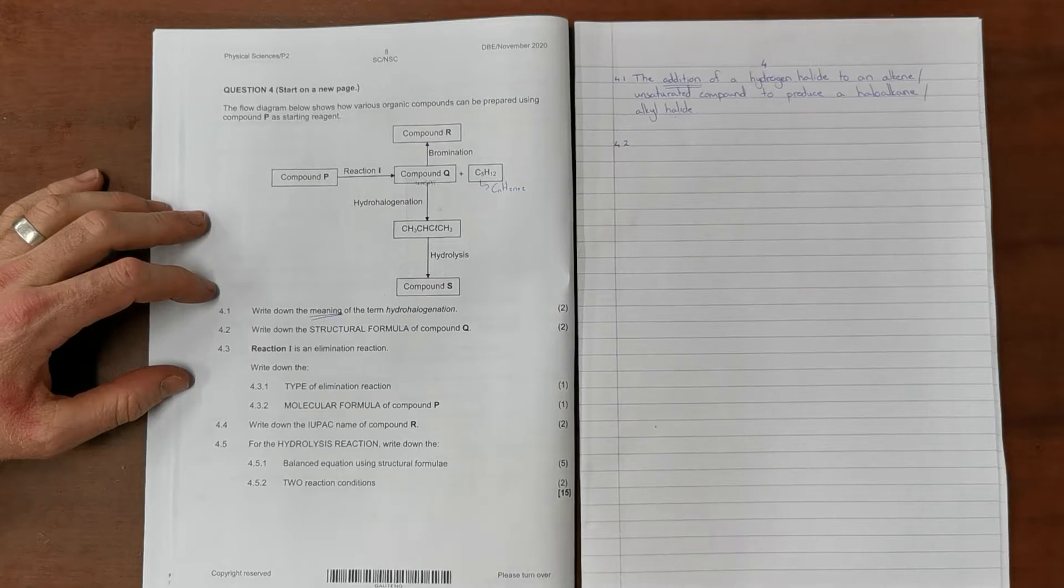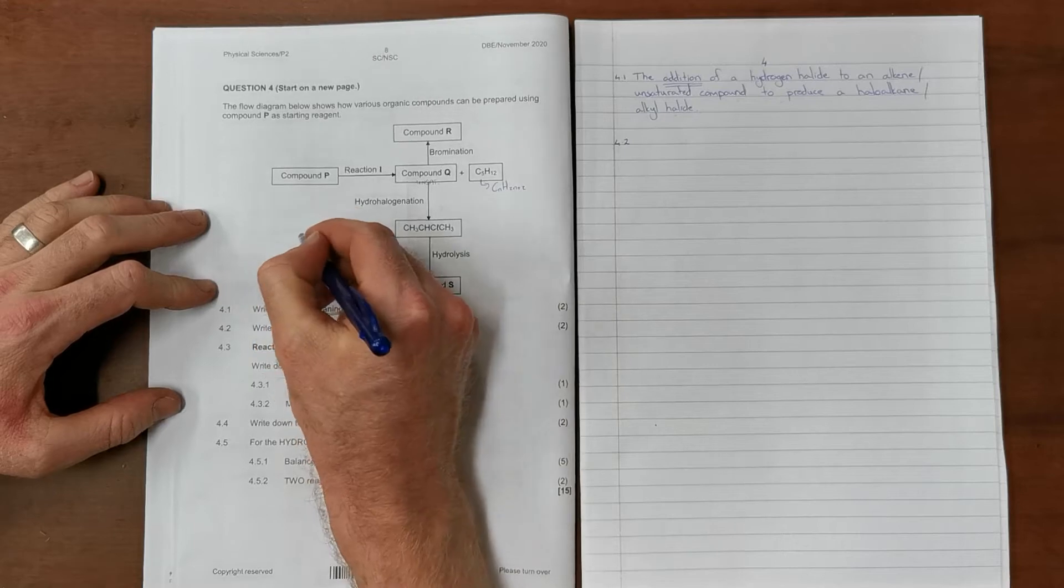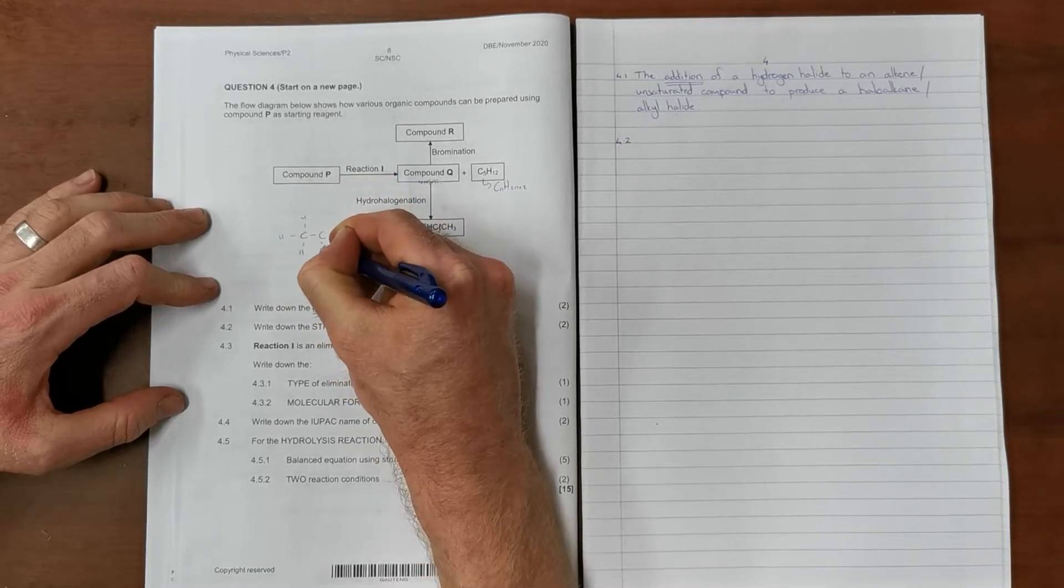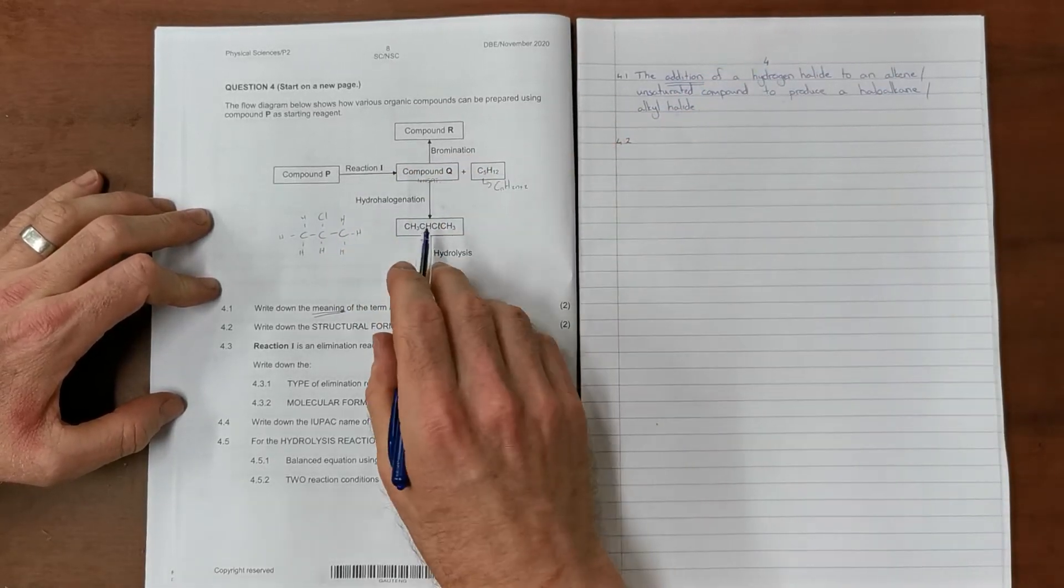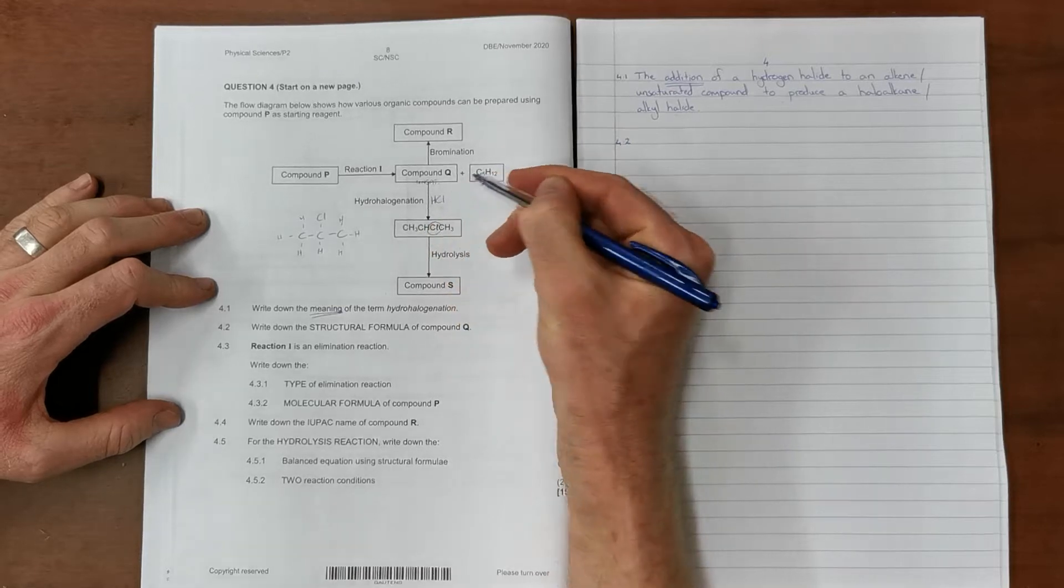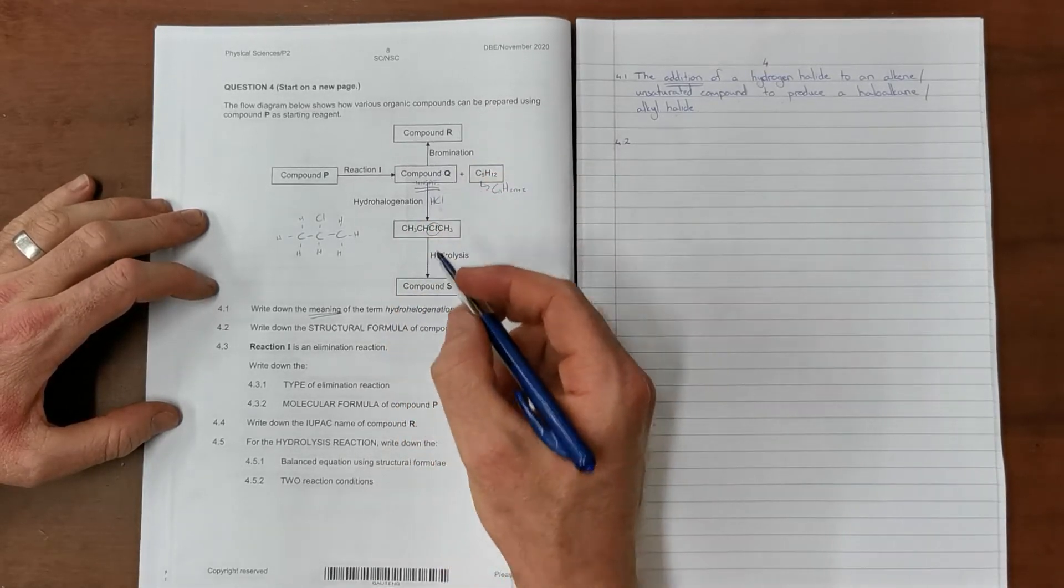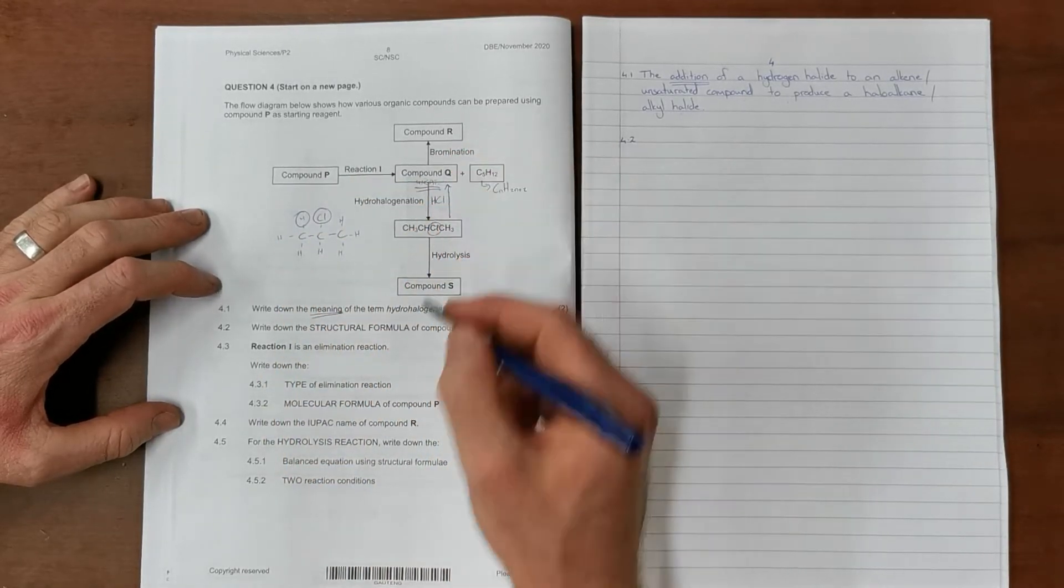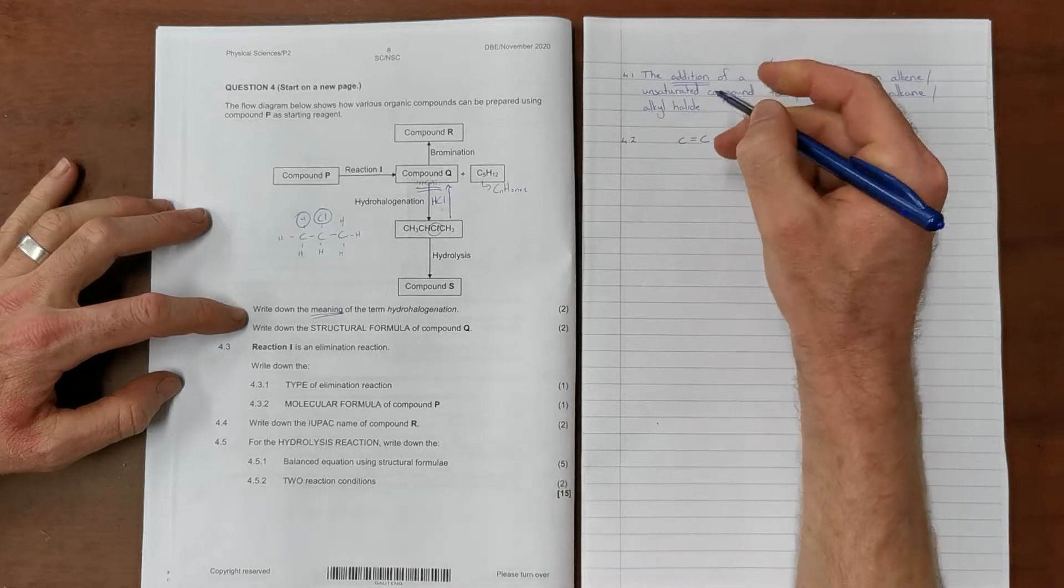Question 4.2 reads: write down the structural formula of compound Q. I started with the given compound which contains three carbons. This carbon contains three hydrogens and a chlorine group. Because we know hydrohalogenation is a hydrogen attached to a halogen, the halogen here must be chlorine, so that is HCl. The only way this would have been possible was if this started as an unsaturated compound, meaning an alkene. We can work backwards through a dehydrohalogenation reaction where we remove a chlorine and hydrogen, giving us the structural formula for the alkene compound.